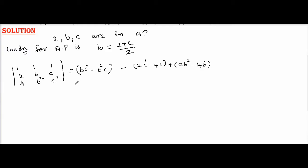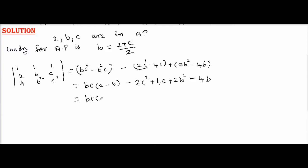Now grouping the terms: BC² minus B²C, minus 2C² plus 4C, plus 2B² minus 4B. This equals BC² minus B² — the next two terms will be C² minus B², which gives us C² minus B².